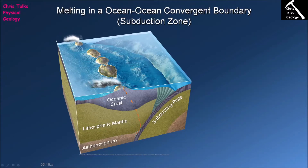Hello everybody, this is Dr. Christopher White and in this presentation we're going to continue looking at igneous rocks. This video corresponds to section 5.10 of your textbook. Convergent plate boundaries are an important location for the generation of magma and they account for approximately 20% of all magma produced.